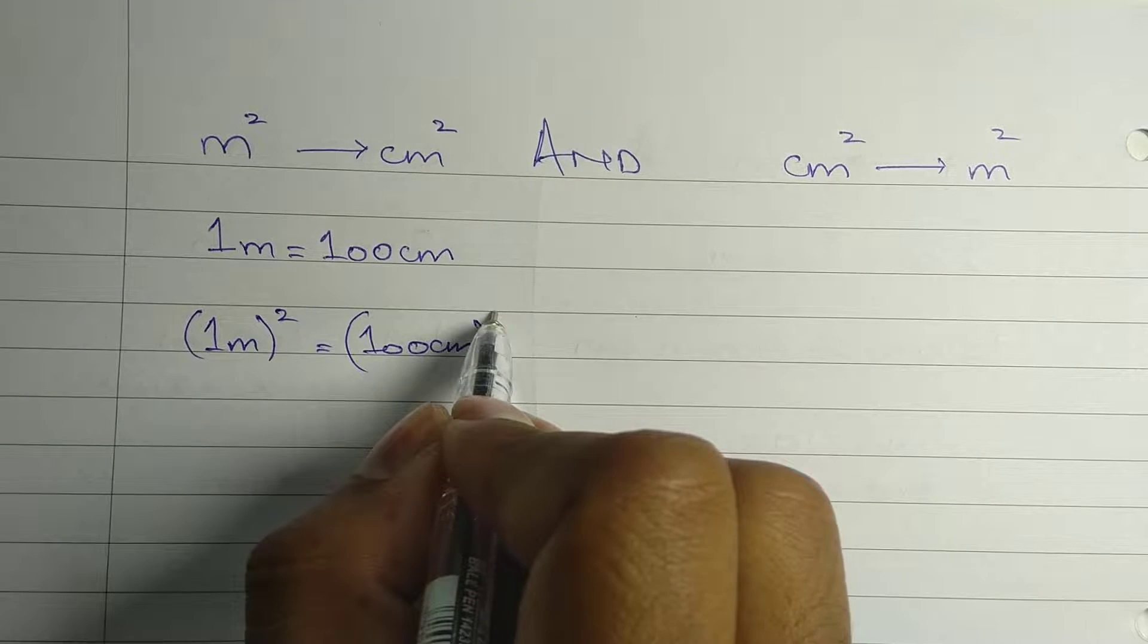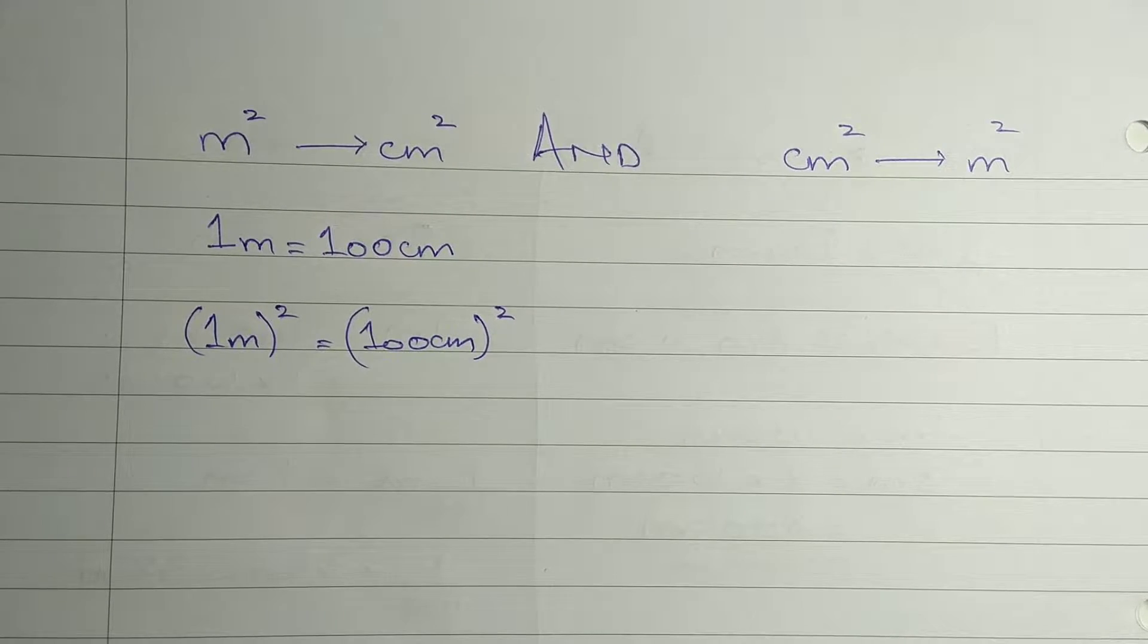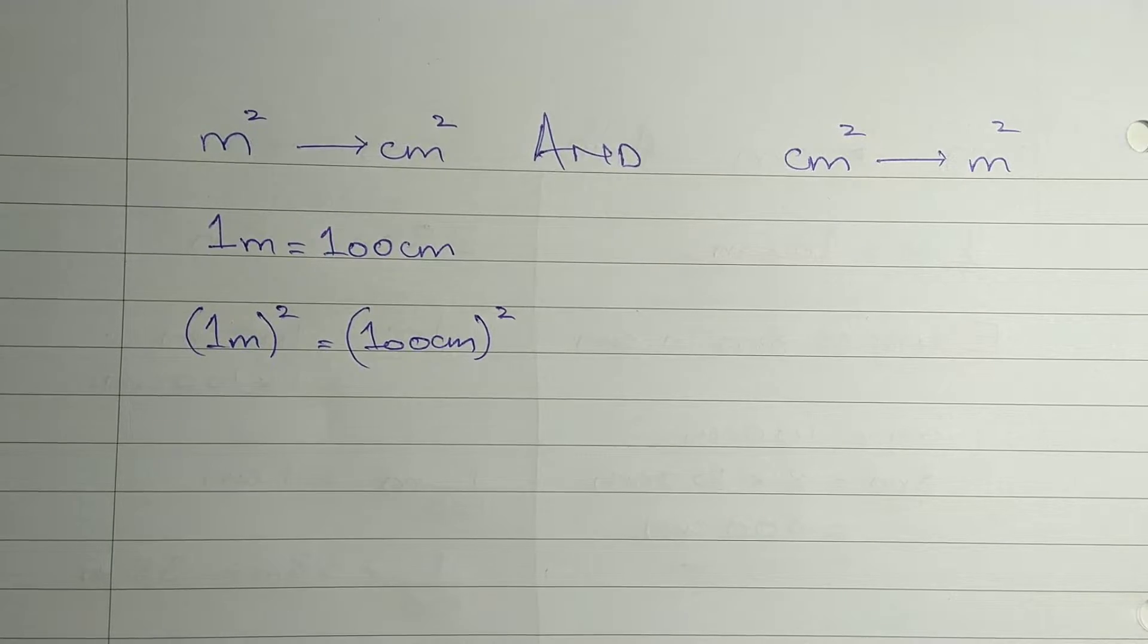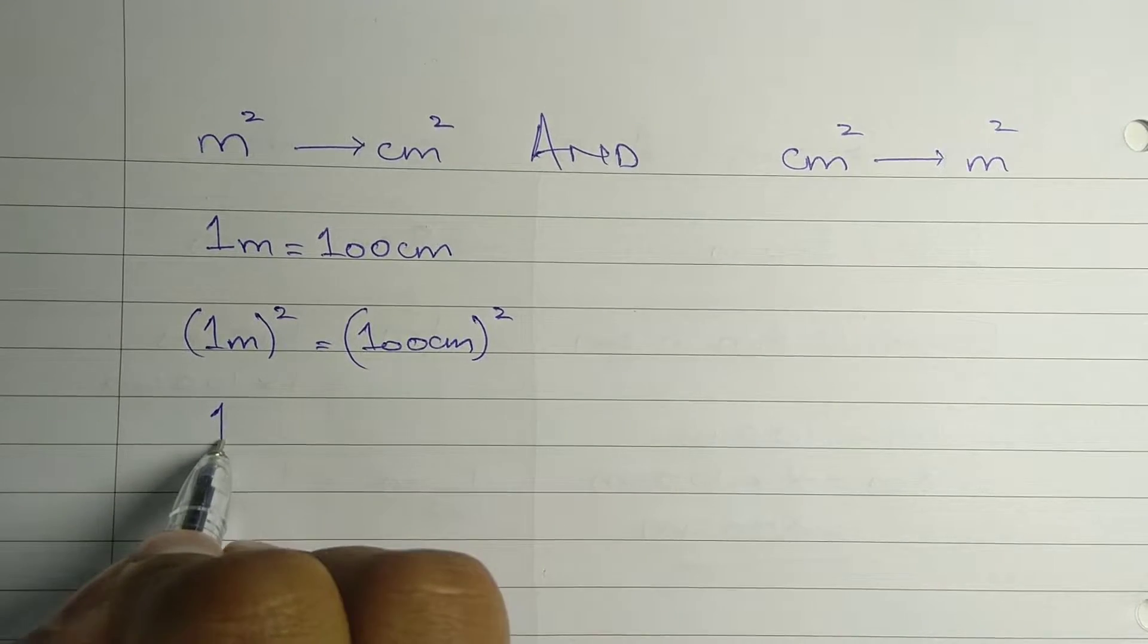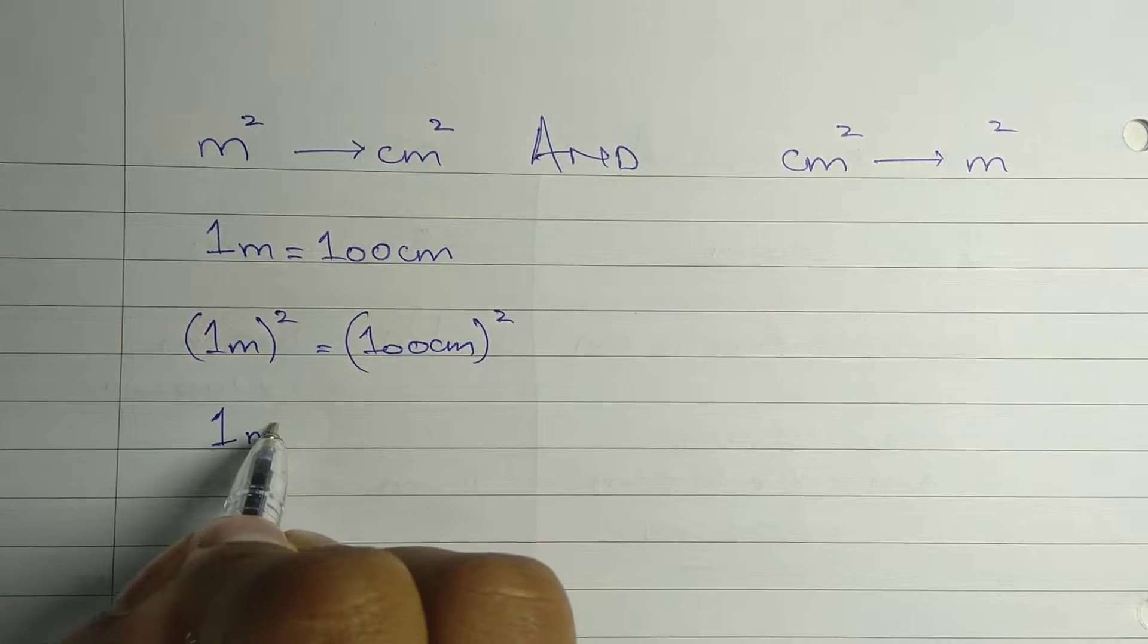We'll use 1 meter equals 100 centimeters and square them on both sides to find the relation between meter square and centimeter square.